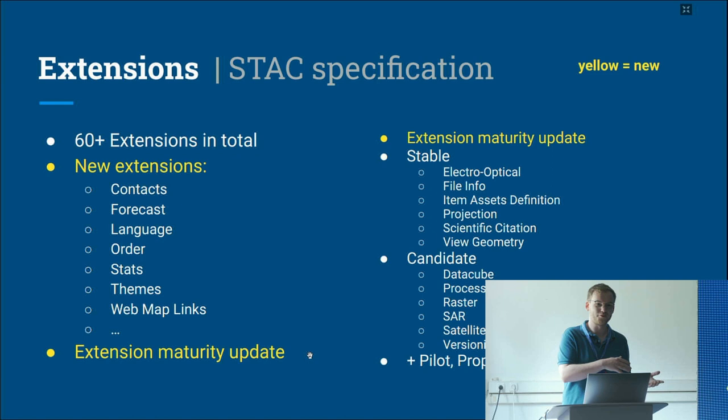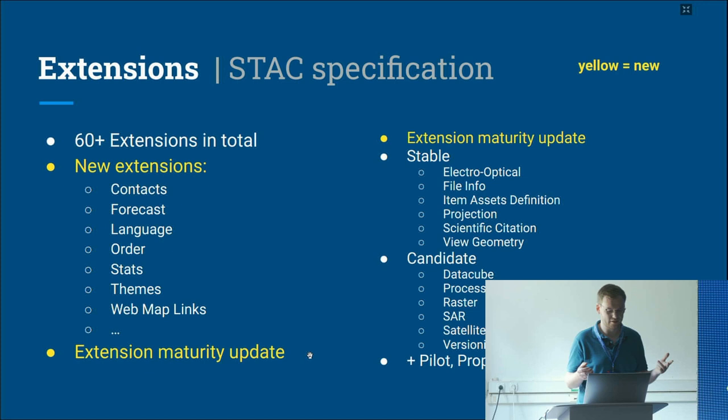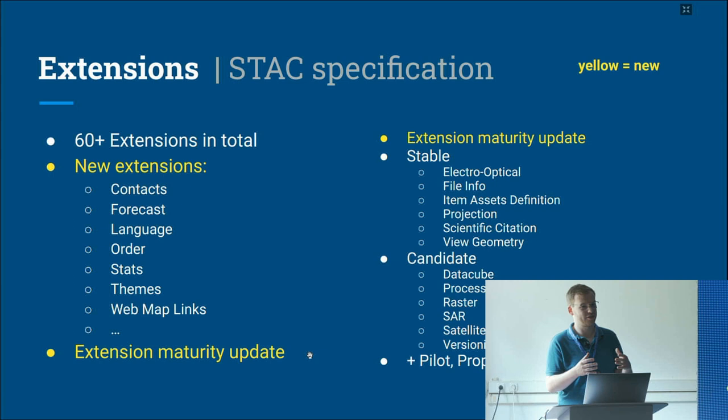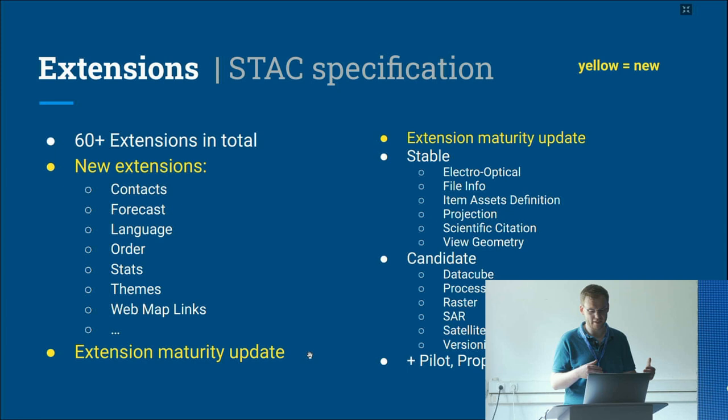Everything highlighted in yellow is new since last FOSS4G. New extensions include the context extension, forecast extension, language extension, order extension, statistics extension, themes, and web map links. There was also a larger maturity update — going through extensions, checking how many implementations exist and how many open issues could break them, to establish whether an extension is stable, a candidate, or still under development.